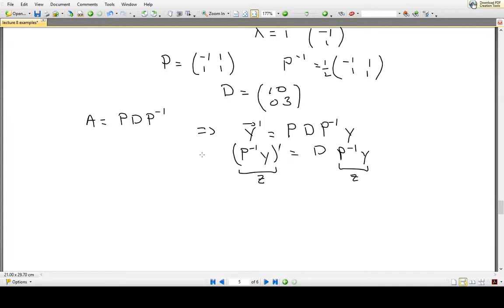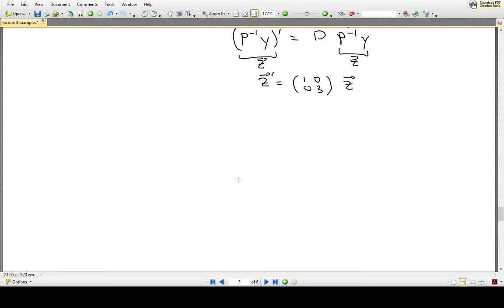Now if we let P inverse Y equals Z, then what our system becomes is a much simpler diagonal system. Z prime, whereas that is a vector, Z prime is equal to the diagonal matrix [[1,0],[0,3]] times Z.